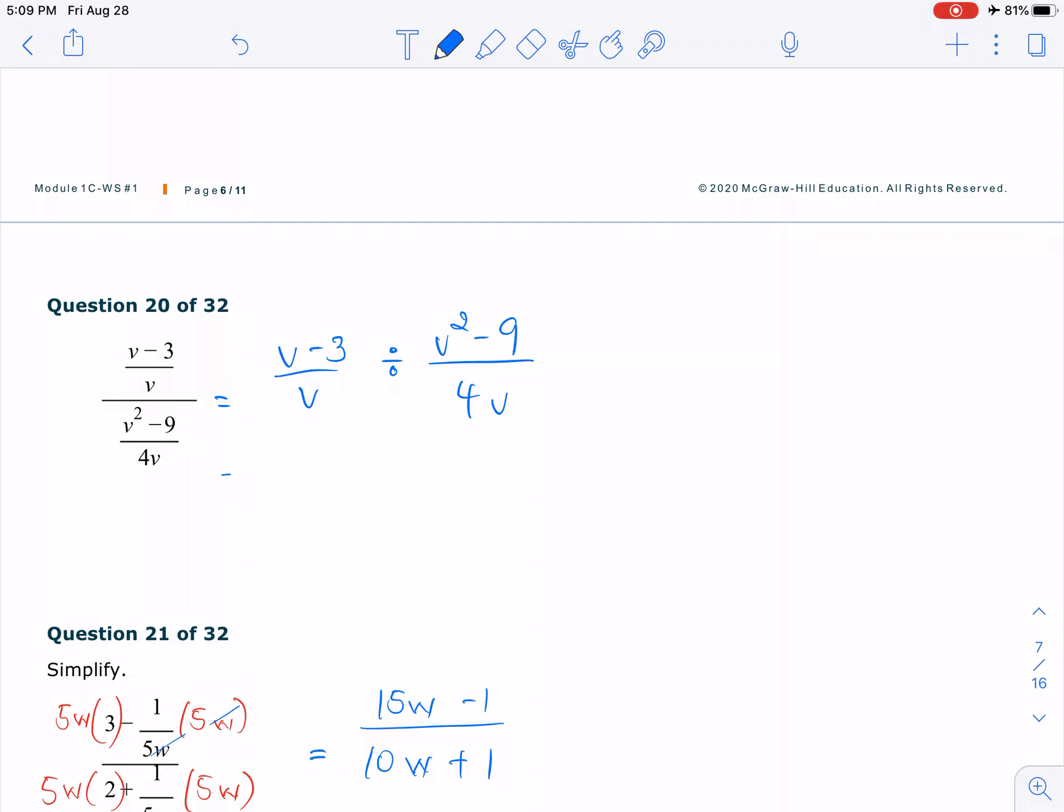And we know how to divide. We simply multiply by the reciprocal. Now you can see that we have to factor out V squared minus 9, which is V plus 3, V minus 3. So we can just cancel and we have 4 over V plus 3.